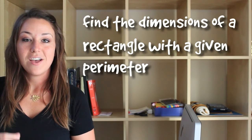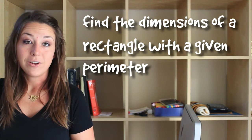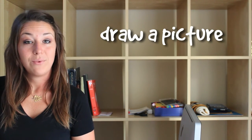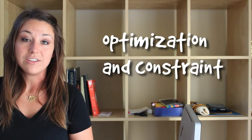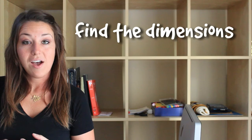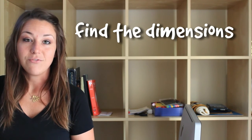Hi everyone! Today we're going to talk about how to find the dimensions of a rectangle with a given perimeter. To complete this problem, we'll draw a picture and write what we know, identify optimization and constraint equations, and then use the derivative of the optimization equation to find the dimensions. Let's take a look.